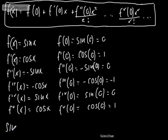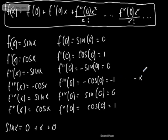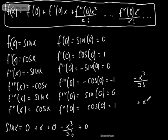Now we simply apply those values. Sine x equals f of 0, which gives 0, plus f dashed of 0 times x, which gives plus x. Then plus 0 from the second derivative. Then the third derivative gives minus 1 times x cubed over 3 factorial, so minus x cubed over 3 factorial. The next term gives plus 0. And then we get plus x to the fifth over 5 factorial.